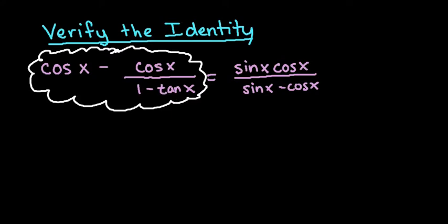The first thing that I want to look for is tangent x. I can see that that is not written in terms of sine and cosine, so I would start by rewriting tangent as sine x over cosine x.